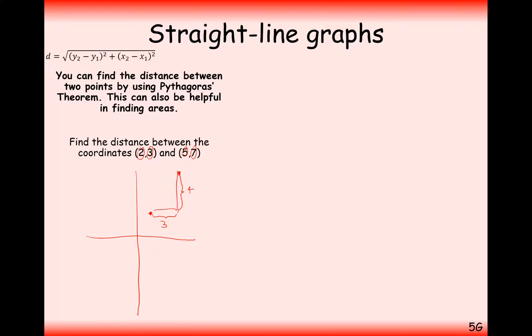So it's just going to be 3 squared plus 4 squared, square rooted, and we'll get 25. Square root of 25 is 5, so the answer here will be 5 as the distance.